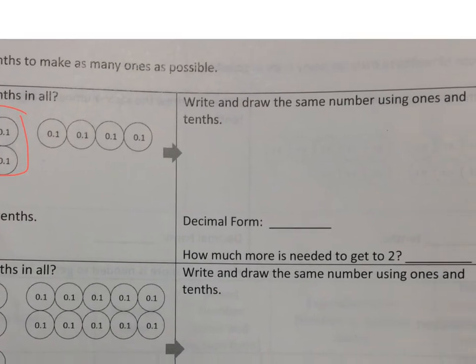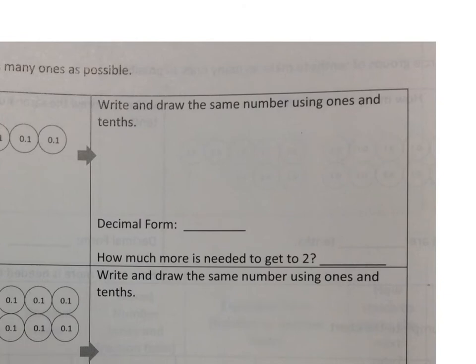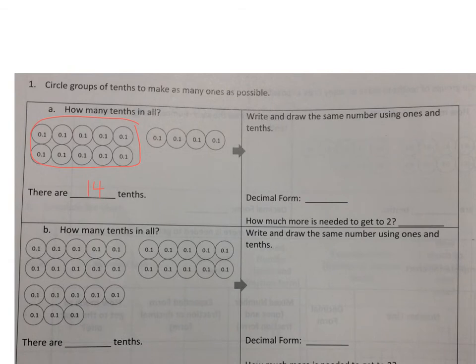Then, we see the arrow there, so we're going to go over here. It says draw the same number using ones and tenths. So if I have two kinds of discs now, I have ones discs and I have tenths discs, how many ones discs should I draw? One, because ten tenths equals one. And then, these four tenths discs, I would still write them as 0.1, 0.1, 0.1, 0.1.